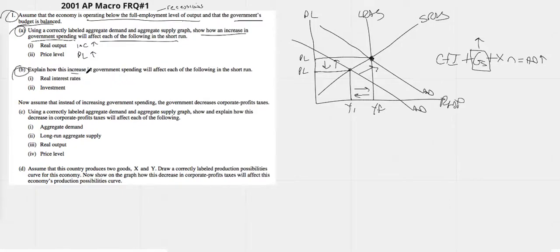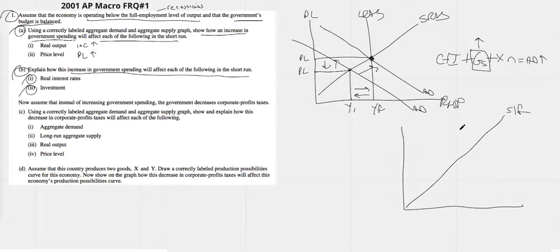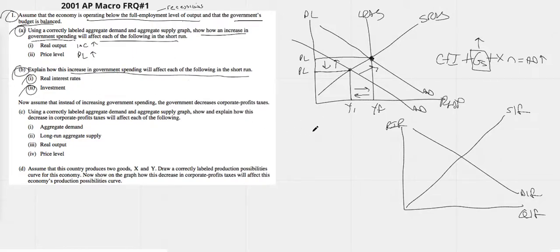Explain how this increase in government spending will affect the real interest rate and investment in the short run. This is really talking about loanable funds. We have our supply of loanable funds, our demand for loanable funds, real interest rate on the vertical, quantity of loanable funds on the horizontal. Understand that this is the crowding out effect. When government spending goes up, it always is going to drive real interest rate higher.